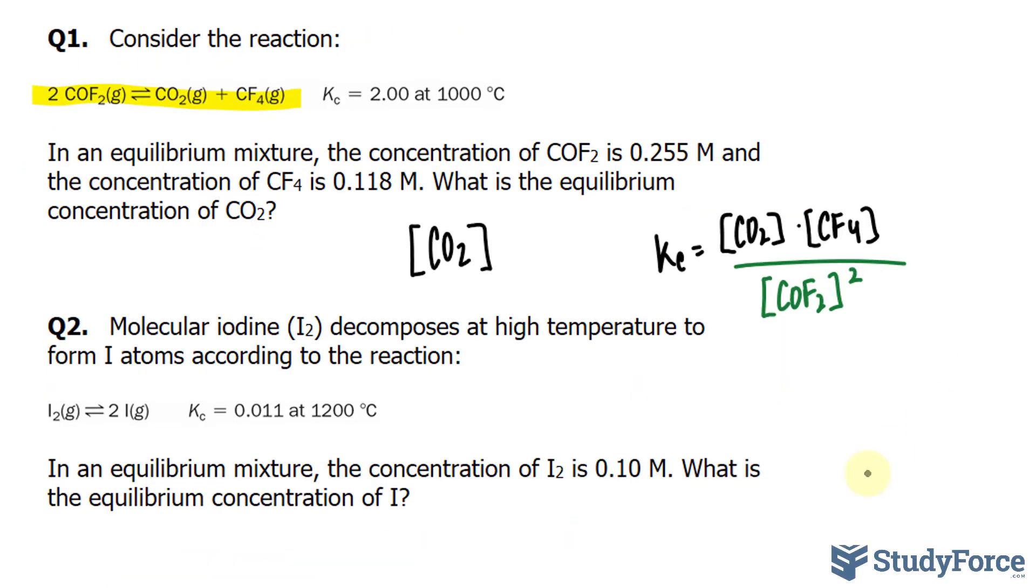Substituting all of the numbers that we have, so this is what we're looking for, we can call that x if you like, CF4 is 0.118, and COF2 is given as 0.255. The constant's also given. It is 2.00 at 1,000 degrees Celsius. Notice that I've replaced all the symbols with their appropriate numbers.